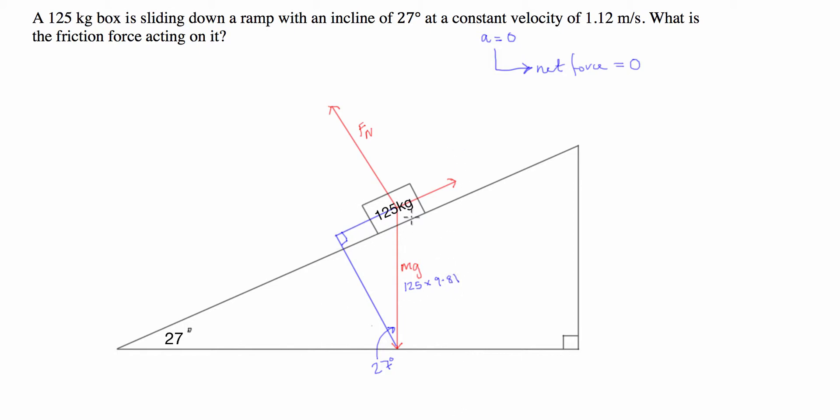And the component of this force in the parallel direction to the plane, this is the angle here, this is the hypotenuse of the triangle, this is the opposite side, so we're going to use sine. So this force is going to be equal to mg sine of the angle, which is 27, and that is equal to 556.7 newtons.